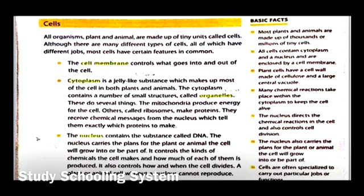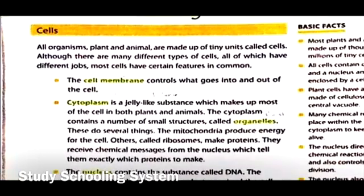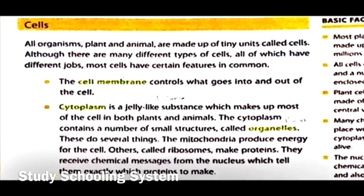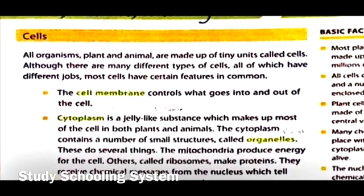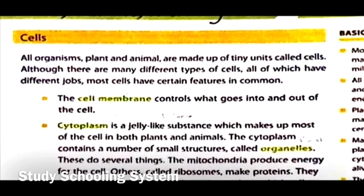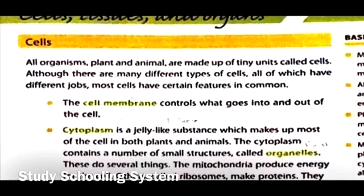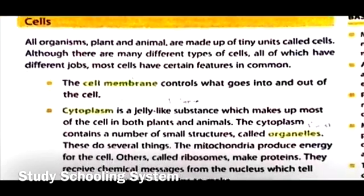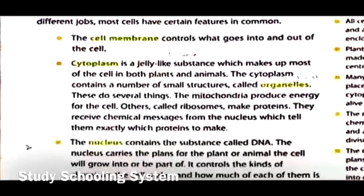The first thing we're going to learn is about cells, so you need to know what cells are. According to this paragraph: 'All organisms — plants and animals — are made up of tiny units called cells. Although there are many different types of cells, all of which have different jobs, most cells have certain features in common. The cell membrane controls what goes into and out of the cell.'